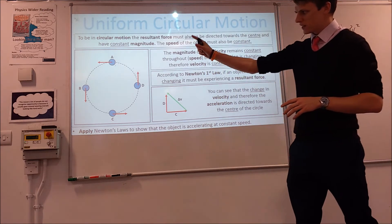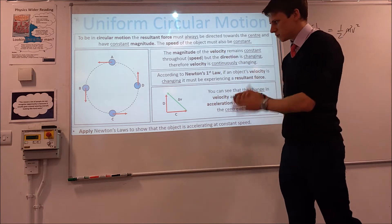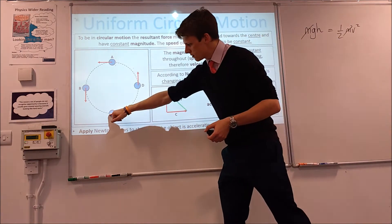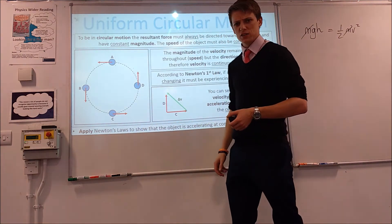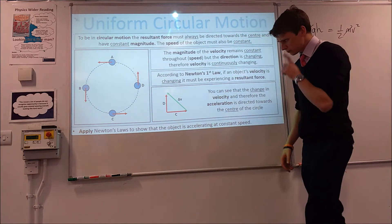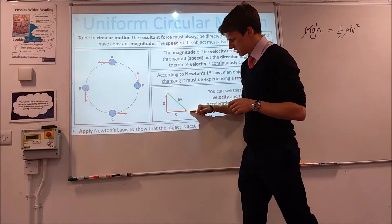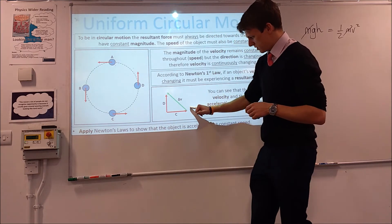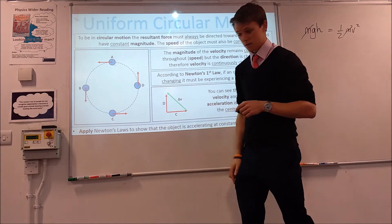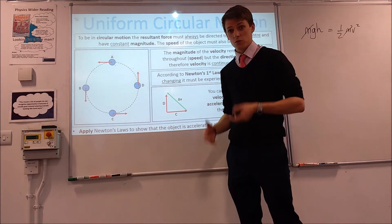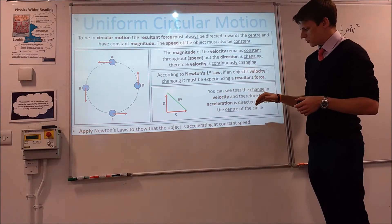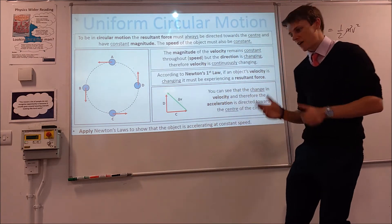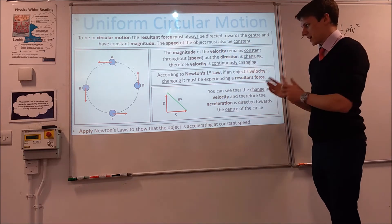Looking at a labelled diagram with different regions and indicated velocity directions, if we focus on points C and D: at C the velocity is directed in the X direction, and at D it's in the Y direction. It must have experienced something to remove the X component and gain a Y component. So the change in velocity is directed towards the centre of the circle. That means the acceleration must be towards the centre of the circle.